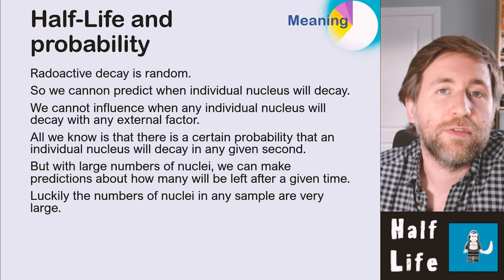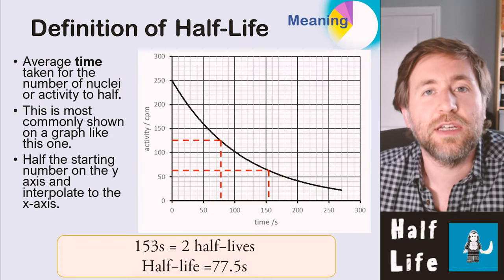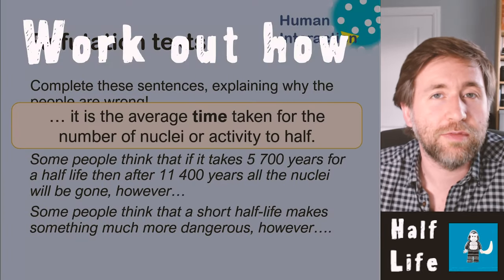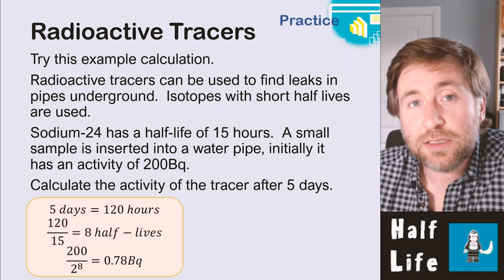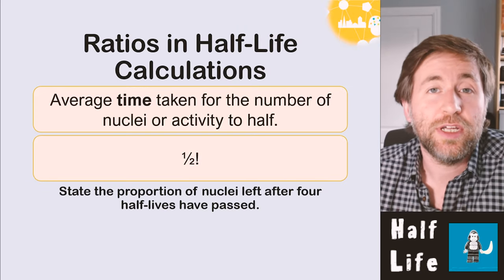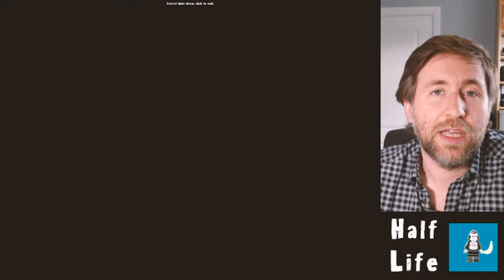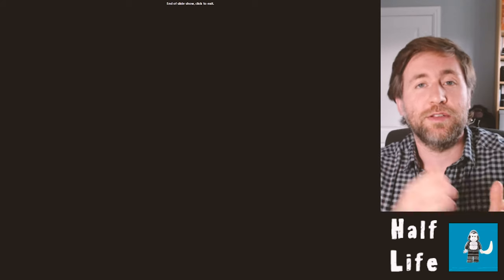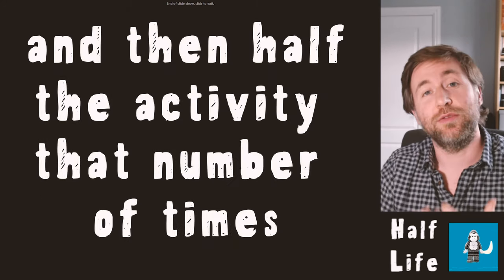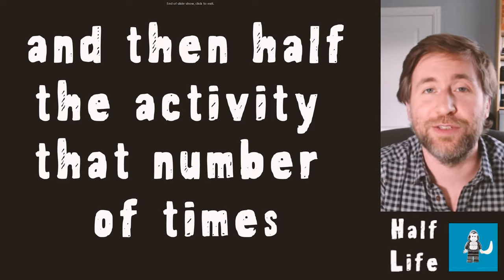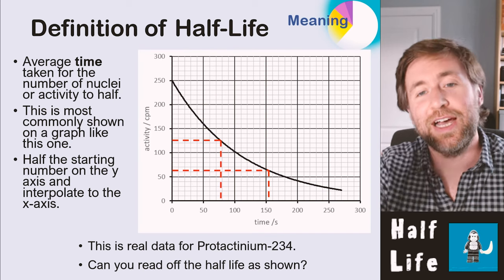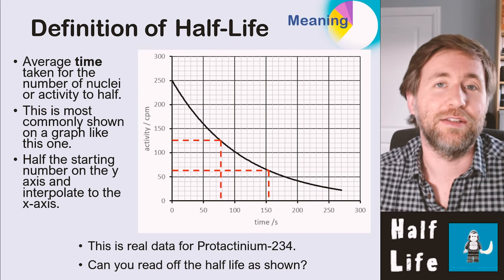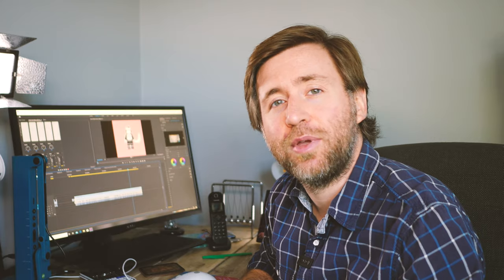For all half-life questions, the key idea is working out how many half-lives have passed — either from a given elapsed time or from a ratio of how much remains — then calculating the time or how much is left. If you have a graph, halve the y-axis value and read off the time taken for that halving. I hope that was useful — if it was, hit the subscribe button.